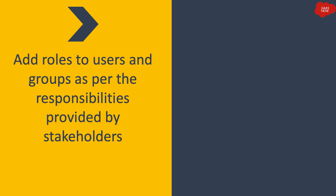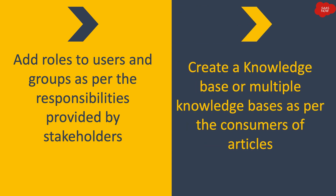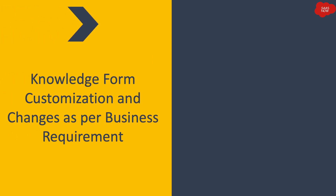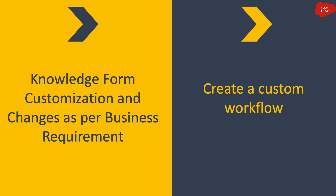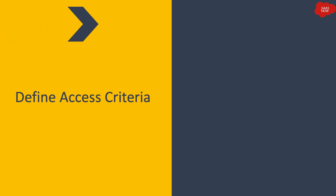Once you have the basic information, you can start the implementation. This begins with adding roles to users and groups as per the responsibilities provided by stakeholders. Then you create one or multiple knowledge bases as per the consumers of articles — for example, if there are IT users and HR users, you create two knowledge bases: one for IT and one for HR. Then perform form customization as per business requirements, and create and attach the workflow for publishing and retiring knowledge bases. You can also use out-of-the-box forms and workflows if the customer is fine with that approach. Then define access criteria for who can read and contribute to articles.